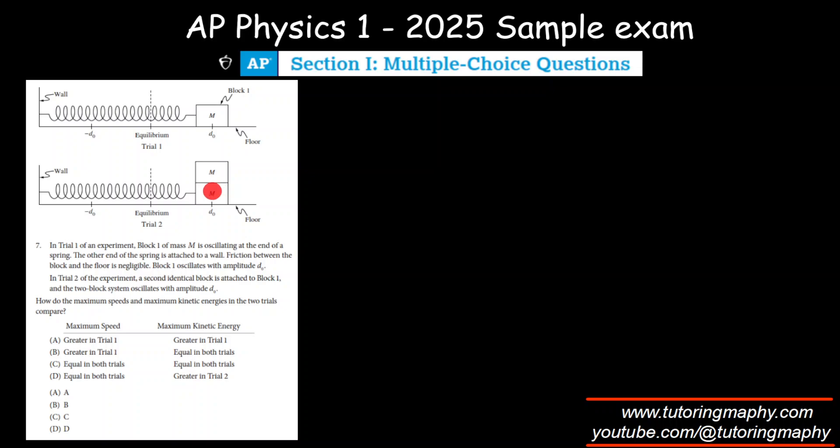In Trial 2, a block of mass M is kept on top of the first block of mass M, and the system is also oscillating with an amplitude of D not. The floor is frictionless, so we need to compare the maximum speed and maximum kinetic energy in Trial 2 compared to Trial 1.